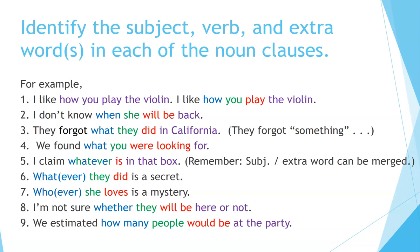'We found what you were looking for.' 'What' is the extra word, 'you' is the subject, 'were looking' is the verb. 'I claim whatever is in that box.' In this case, the subject and the extra word are merged together in 'whatever.' The verb is 'is.' 'In that box' is a prepositional phrase that completes the noun clause. 'What/whatever they did is a secret.' This comes at the beginning of the sentence. The extra word is 'what' or 'whatever,' the subject is 'they,' 'did' is the verb.